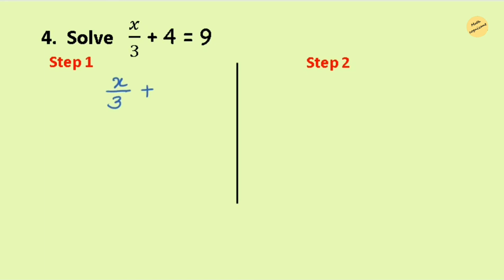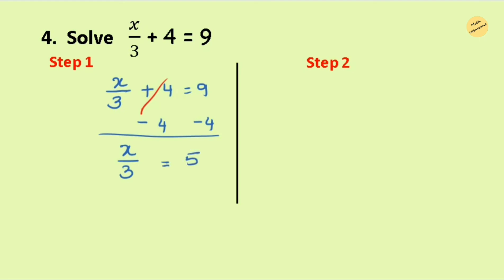One more question also involves division and addition. We need to eliminate 4 first by subtracting 4 from both sides, leaving x over 3 equals 5. Now it's a division equation, so we do the inverse operation — multiplication. Multiply 3 on both sides of the equal sign. The 3s from numerator and denominator cancel on the left, leaving x equals 5 times 3.